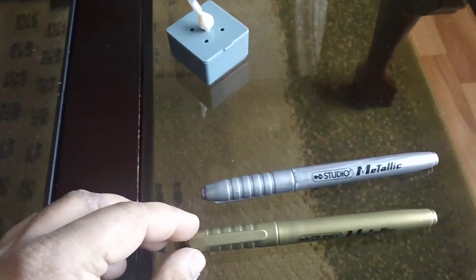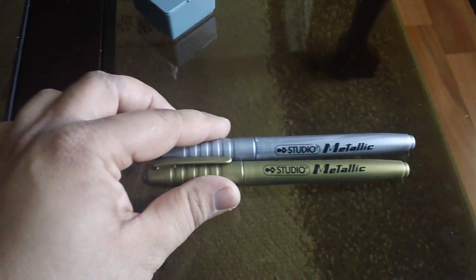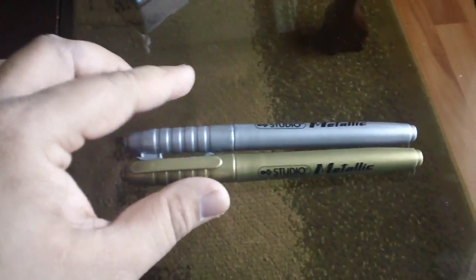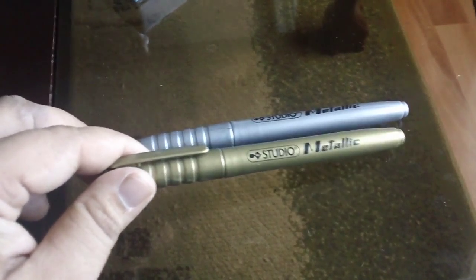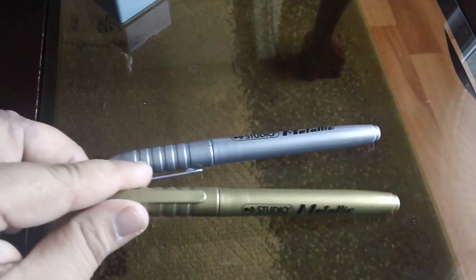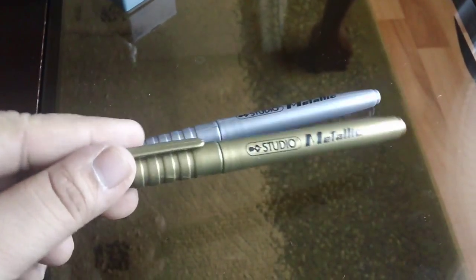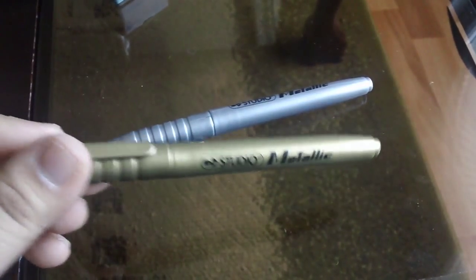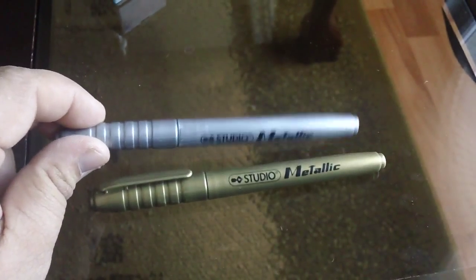Then I bought these. They actually came together in one pack, like two markers in one pack. So these were a dollar, two for a dollar. And these are basically apparently a metallic permanent marker, gold and silver.